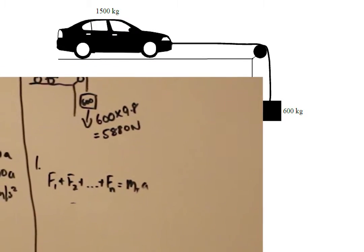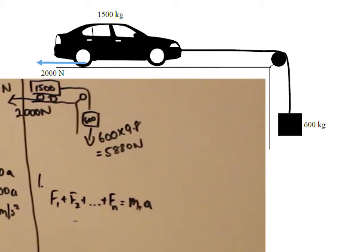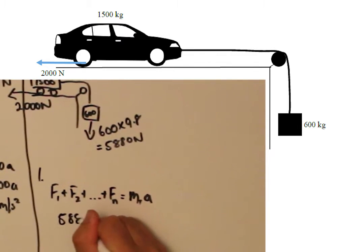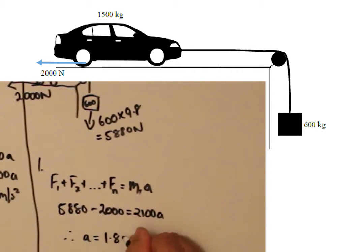If we add the frictional force to the car, we get 5,880 minus 2000 equals 2100 times A. Therefore, A equals 1.85m per second squared.